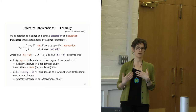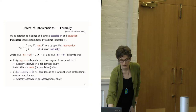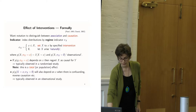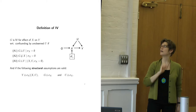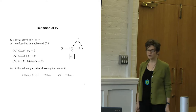So what an instrumental variable or any causal inference method should give us is: if we observe association, how do we get to causation? If our data comes from the observational regime, how do we get to the interventional distribution? The instrumental variable does give us something in this direction.